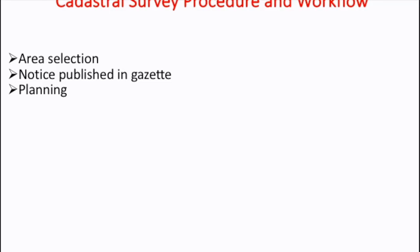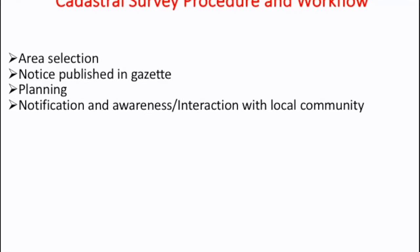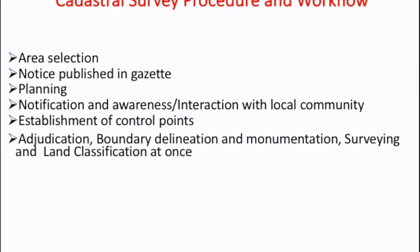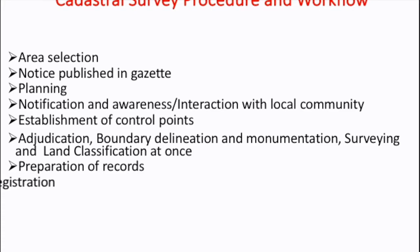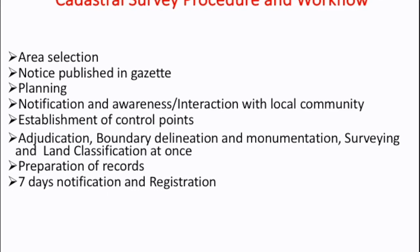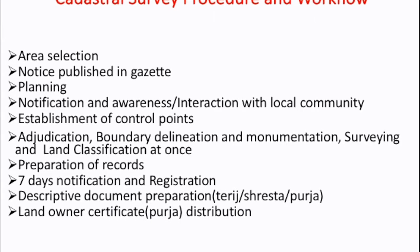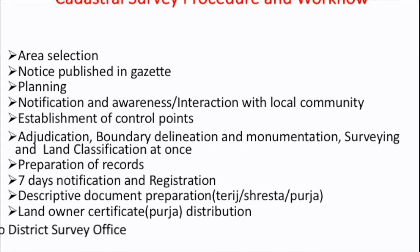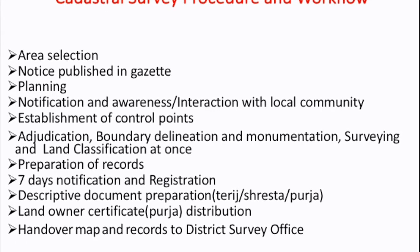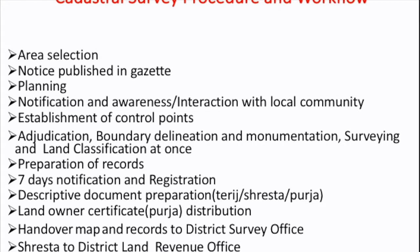Planning, then notification and awareness, interaction with local community, establishment of control point, adjudication, boundary delimitation and monumentation, surveying and land classification, preparation of records, seven-day notification for any missing registrations, description document preparation, Srestha Purja and land ownership certificate distribution, and handover of map records to the district survey office and SESTA to the district land revenue office.